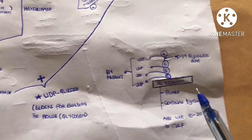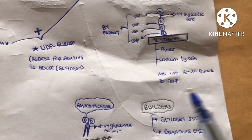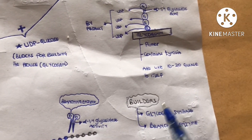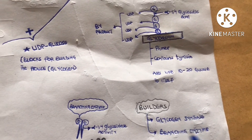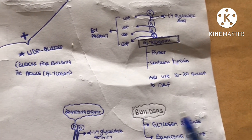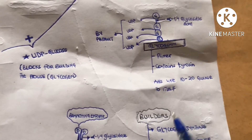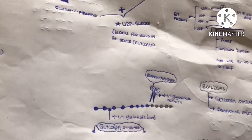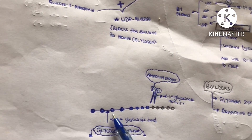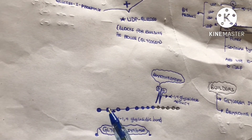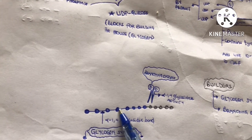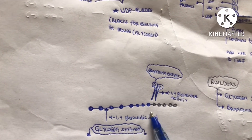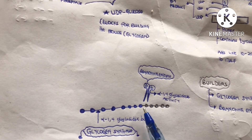Glycogen synthase helps in the formation of the linear chains by forming alpha-1,4 glycosidic bonds. It extends the linear chains of glucose units. All the linear chain linkages are the work of glycogen synthase, which forms alpha-1,4 glycosidic bonds.